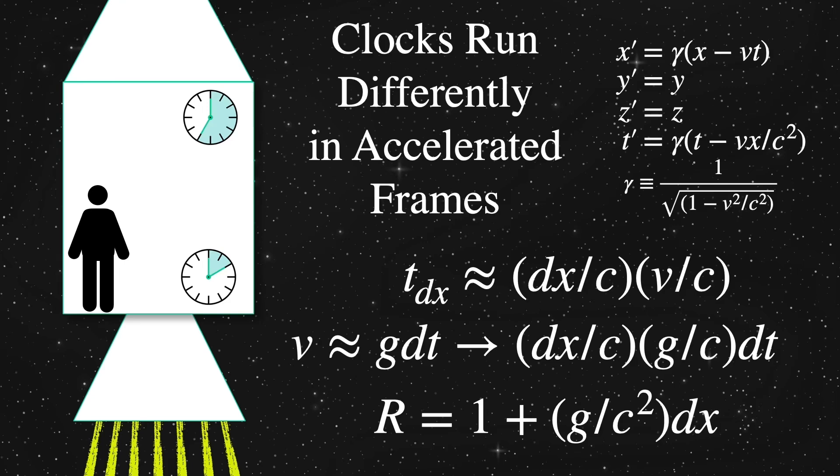But what if time itself were altered and clocks at different points in spacetime ran at different rates? In 1917, this is precisely what Einstein concluded would occur in an accelerating box.